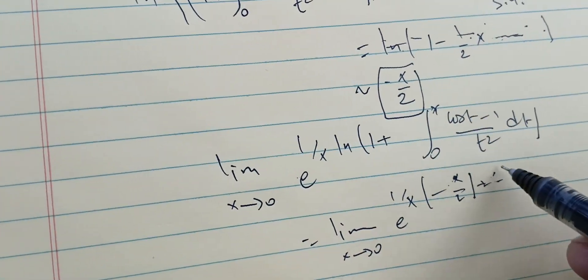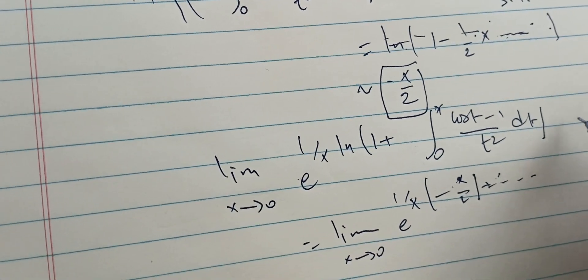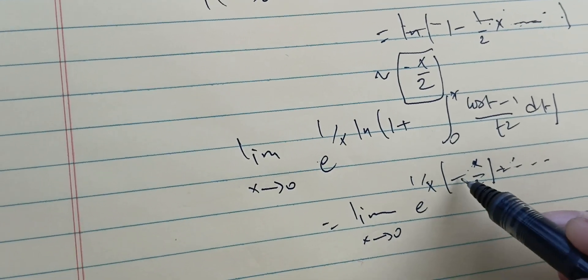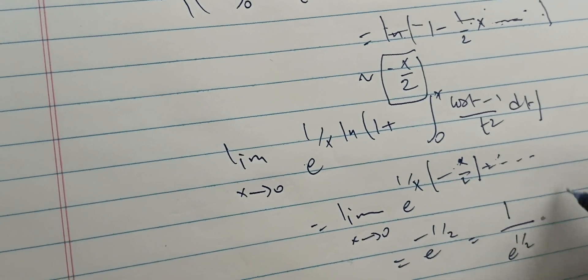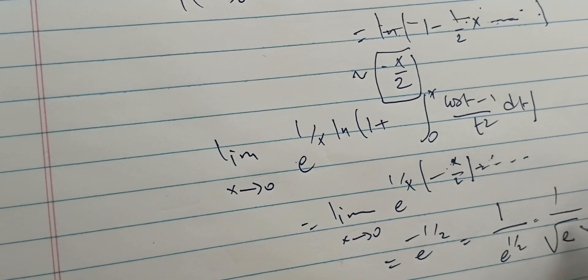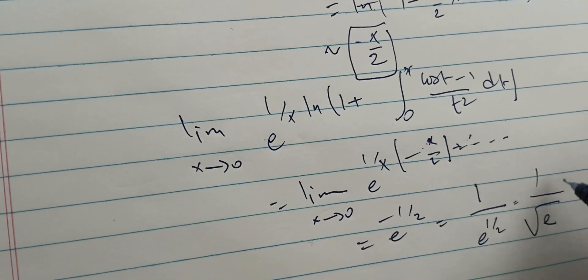We don't care about the higher-order terms because they go to zero as x goes to zero. So the limit becomes e to the power of minus one half, which equals one over e to the one half, which is one over the square root of e. That is our final answer.